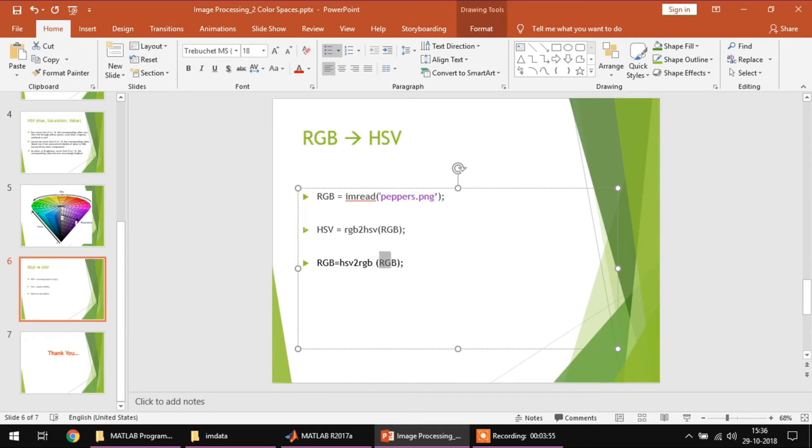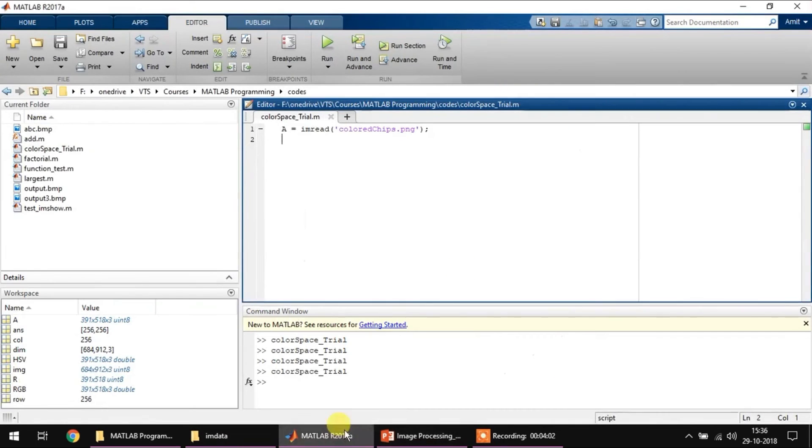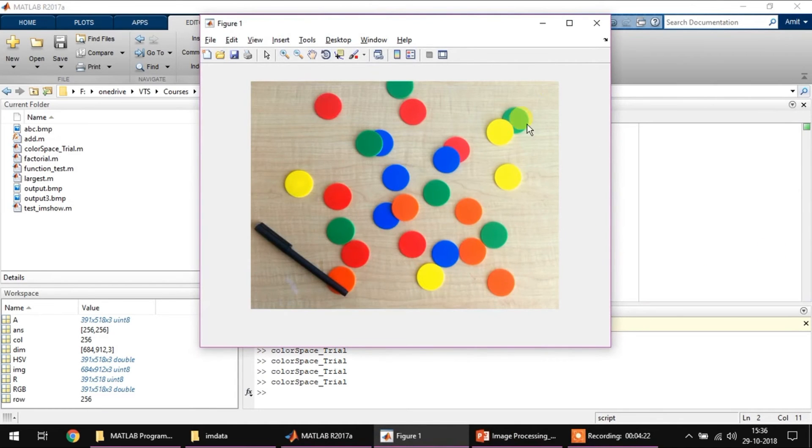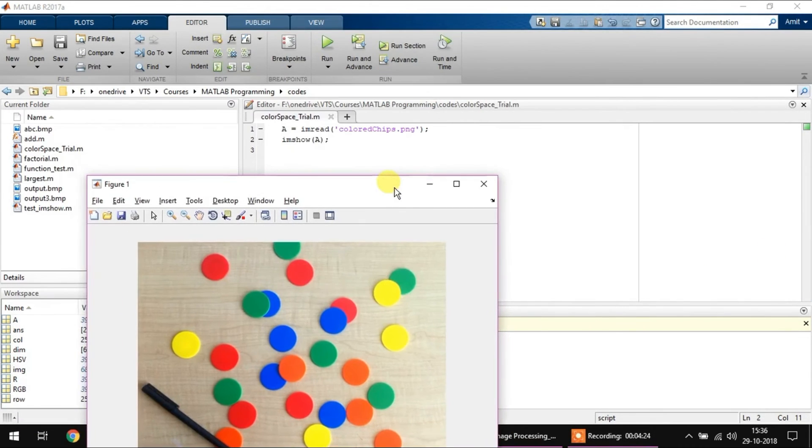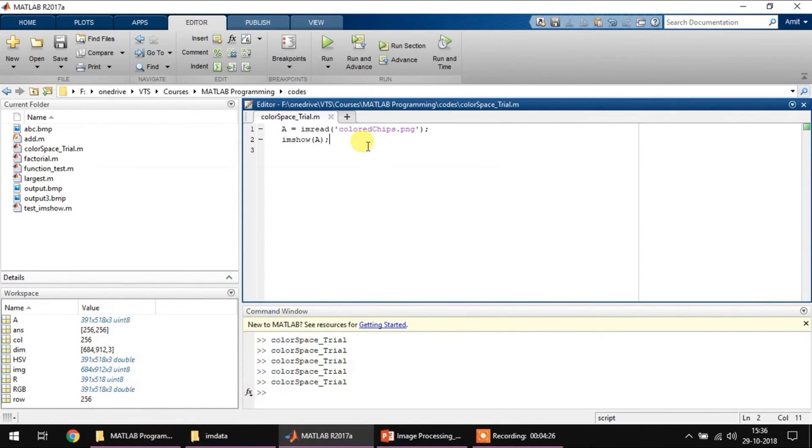So let's try it out with the code. As shown in the last video, color chips is an image which we will be using right now. So let's say A is equal to imread color chips, and I'll do imshow A. That will display this image, the colored chips.